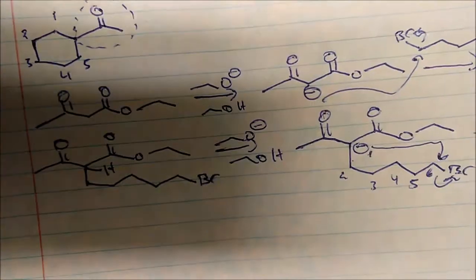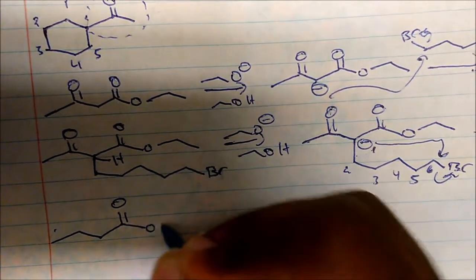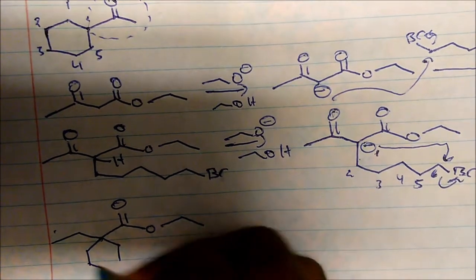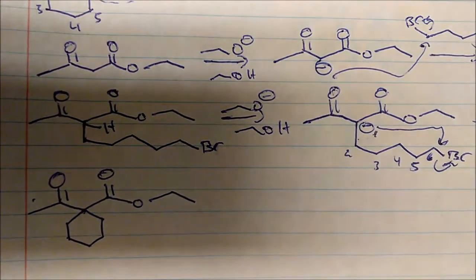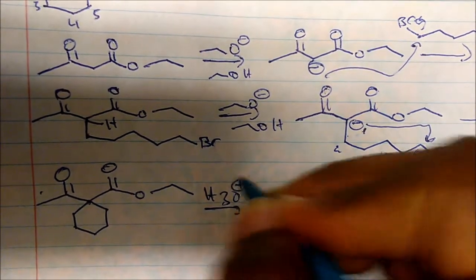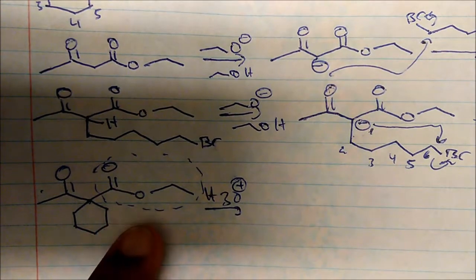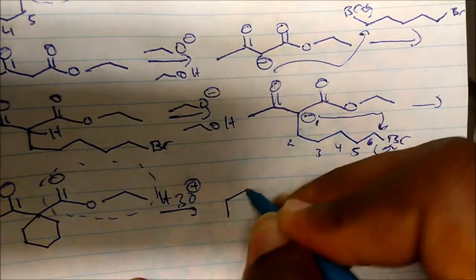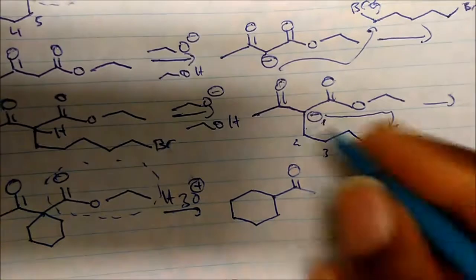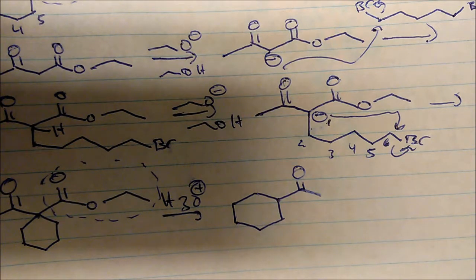If you run this reaction forward, you can see we come to a structure where we form a six-membered ring. Once we hydrolyze with acid, this whole group goes to carbon dioxide — we create the carboxylic acid, do the hydrogen bonding, flip and rotate, and it goes to CO2. We're left with the structure we initially wanted.